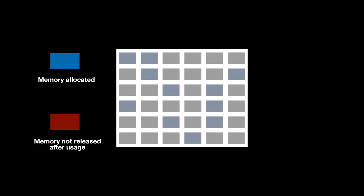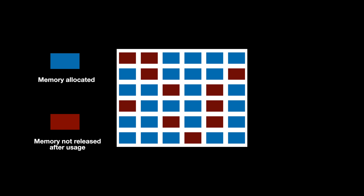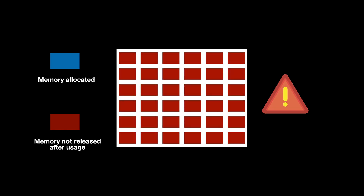If you forget to delete the memory, your program will have a memory leak. This means that if the program runs continuously over time, more and more memory is not freed, memory usage grows to critical levels, and your system will slow down or crash completely.